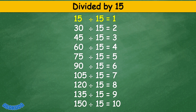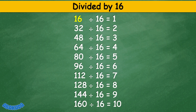Divided by 15. 15 divided by 15 equals 1. 30 divided by 15 equals 2. 45 divided by 15 equals 3. 60 divided by 15 equals 4. 75 divided by 15 equals 5. 90 divided by 15 equals 6. 105 divided by 15 equals 7. 120 divided by 15 equals 8. 135 divided by 15 equals 9. 150 divided by 15 equals 10.